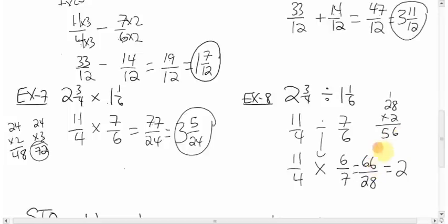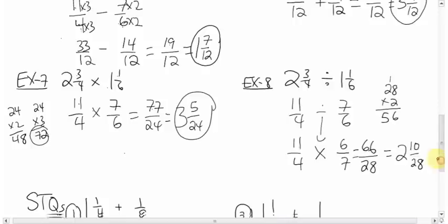How much left over? Well, fifty-six. Sixty-six, the difference is ten. So, it's ten left over, over twenty-eight. Reduce this. We know that two goes into both of these five times. Two goes into there fourteen times. You get two and five over fourteen.